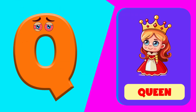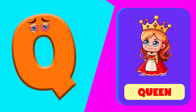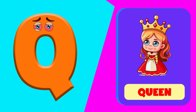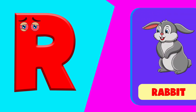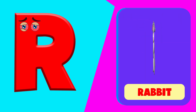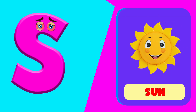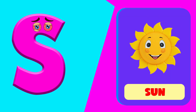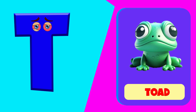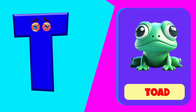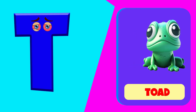Q is for queen. q, q, queen. R is for rabbit. r, r, rabbit. S is for sun. s, s, sun. T is for toad. t, t, toad.